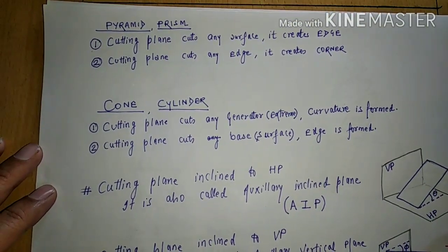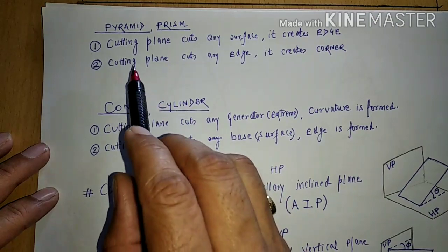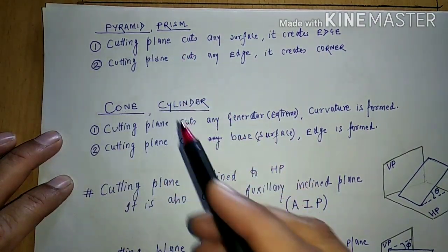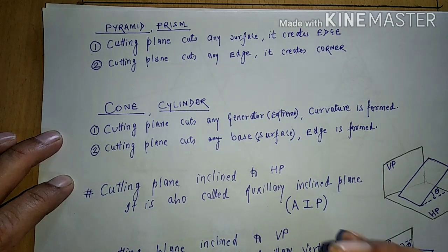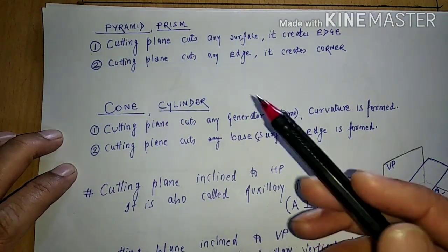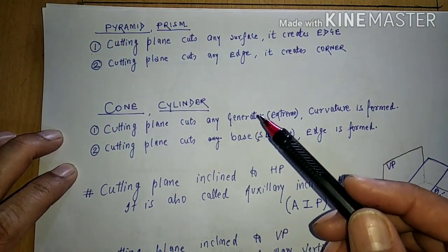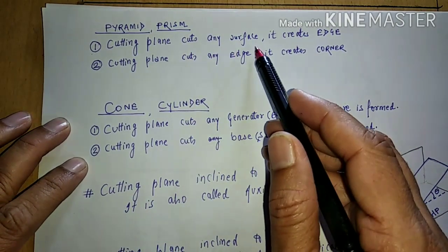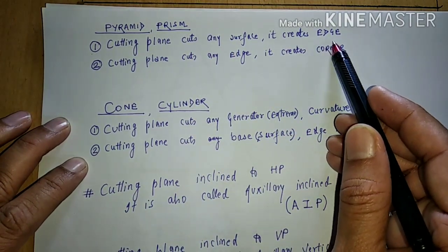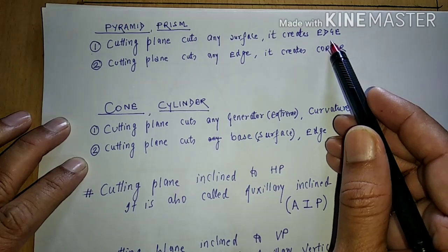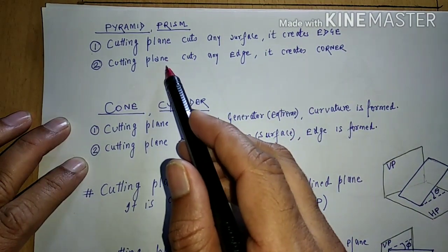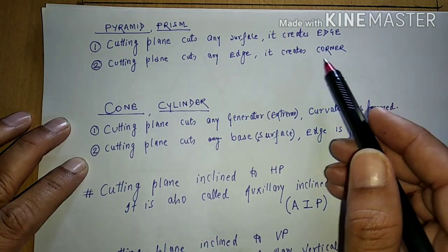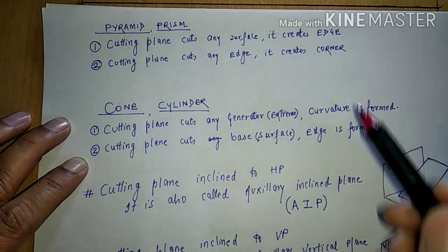When we pass this cutting plane through a pyramid or prism — pyramid has a triangular surface, prism has a rectangular surface — if this cutting plane cuts any surface, it will create an edge. And if this cutting plane cuts any edge, it will create a corner. Please remember this point; it is very important.